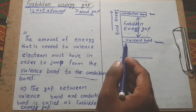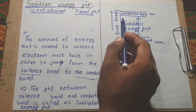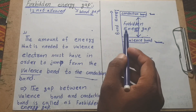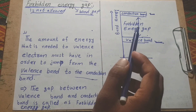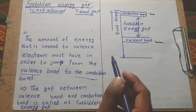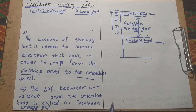The energy gap increases from valence band to conduction band. The gap between the valence band and conduction band is the forbidden energy gap. That concludes today's topic.